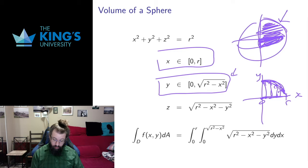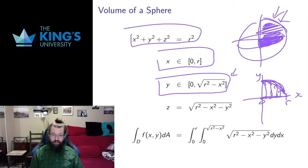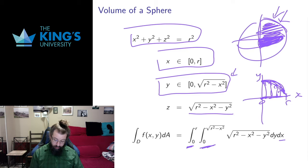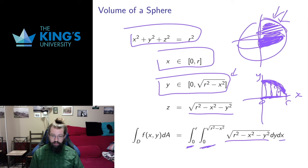That gives me the quarter circle in the plane, and above it I have the graph of a function representing the sphere. Solving for z in the sphere equation and taking the positive square root since we're above the xy-plane, the function is z = √(r² − x² − y²). That gives me the volume of one eighth of the sphere: constant bounds 0 to r outside, variable bounds 0 to the circular arc inside, and the height function to integrate.